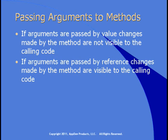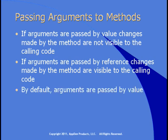For example, you have a variable, you set its value equal to 5, you pass it to the method, the method changes the value of that argument to 10. Back in your calling code, your variable is now equal to 10. By default, arguments are passed by value to methods. If you want to pass by reference, you have to ask for it.